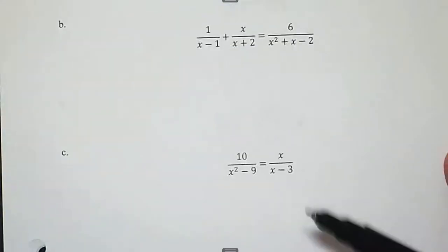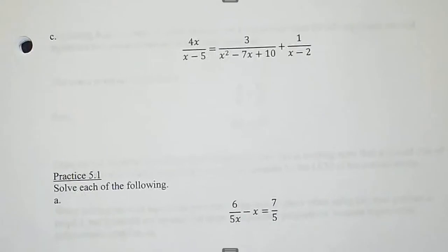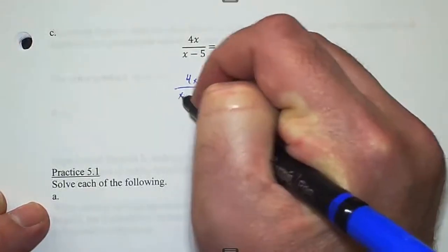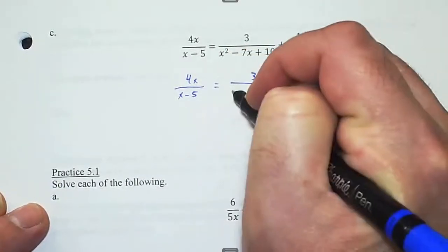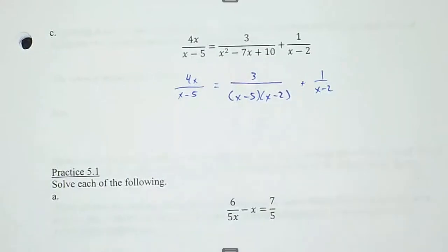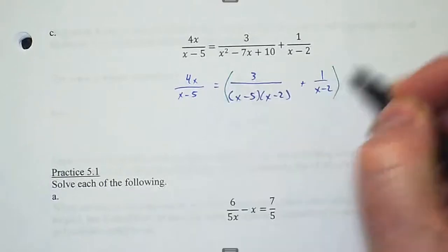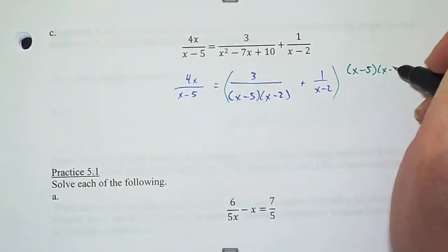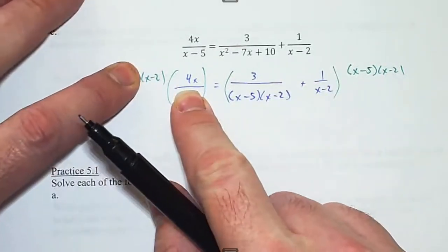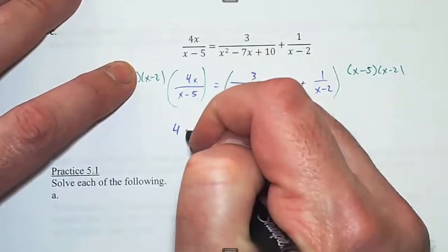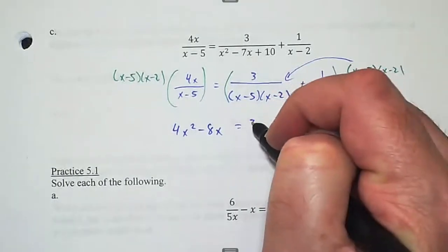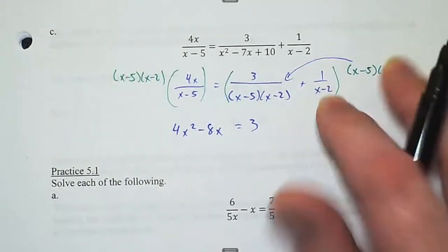Let's take a look at another example together. First step — factor. That factors as (x − 5)(x − 2). So we're going to multiply both sides by (x − 5)(x − 2) because that is the least common multiple of all three denominators. The (x − 5)'s cancel out and I multiply 4x times (x − 2) giving 4x² − 8x. Here the (x − 5) and (x − 2) cancel out entirely so I get just 3.